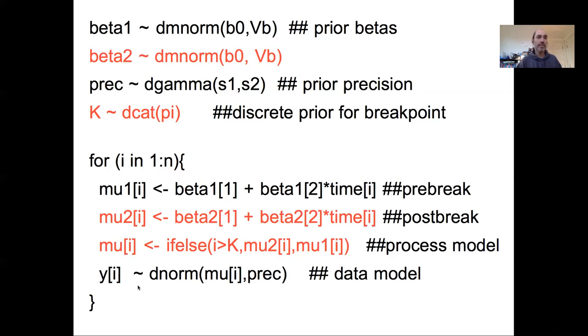Then the rest of the model is the same as before. We have some observed data normally distributed around whatever our model predicts with some precision. You could imagine taking this framework and implementing many of the different options that we saw before for change point responses. This is just a change in slopes model. If we had everything constant before break, we might drop this initial slope. If we just saw a step change in the intercepts, we might just see a beta2-1 and not have this beta2-2.